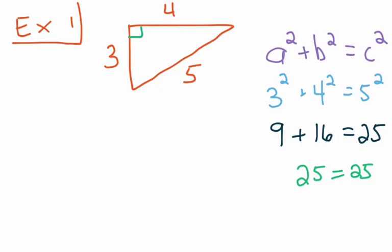C squared equals 25 as well. And so because the two sides are equal to each other after we square, then it is a right triangle. Let's take a look at the next example.